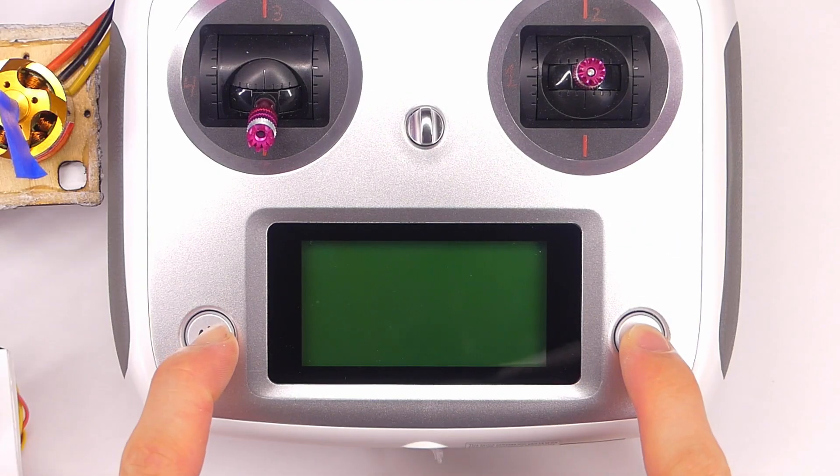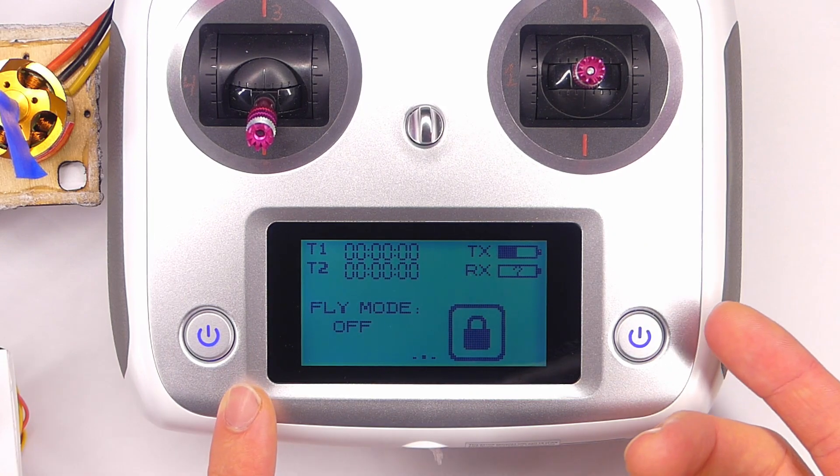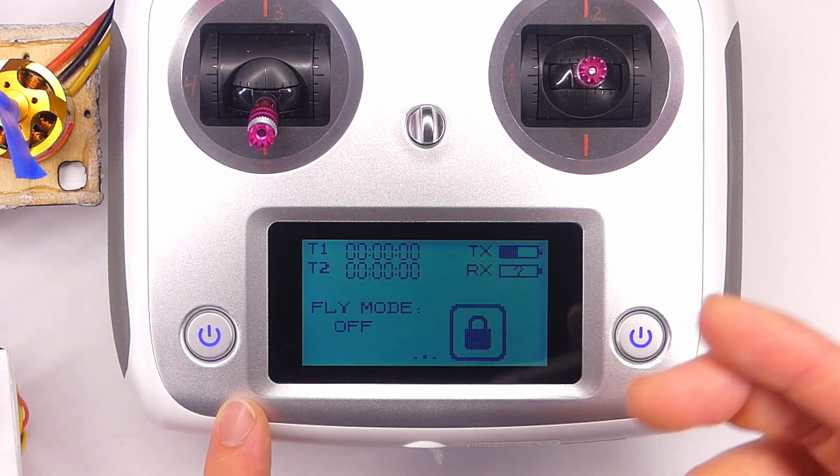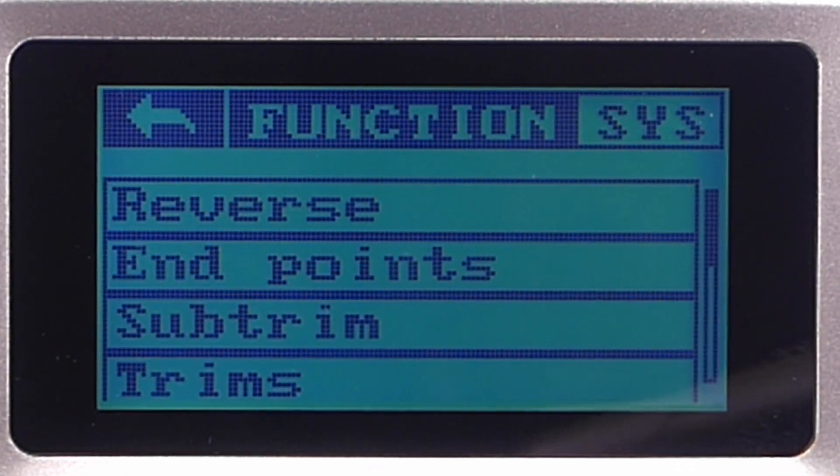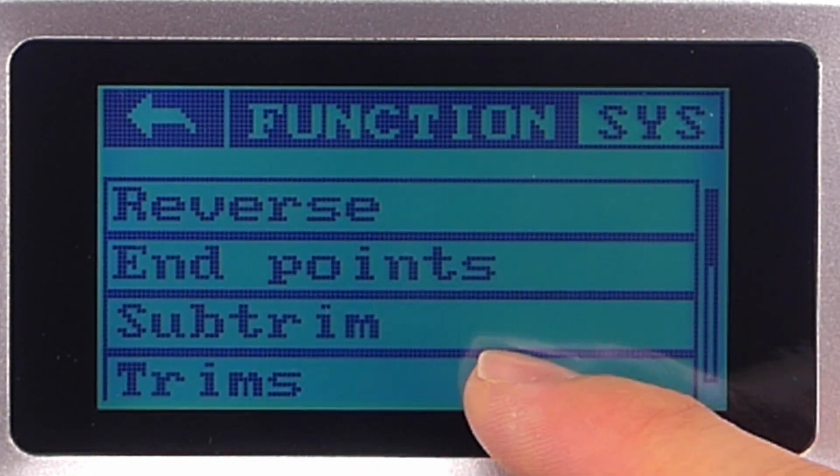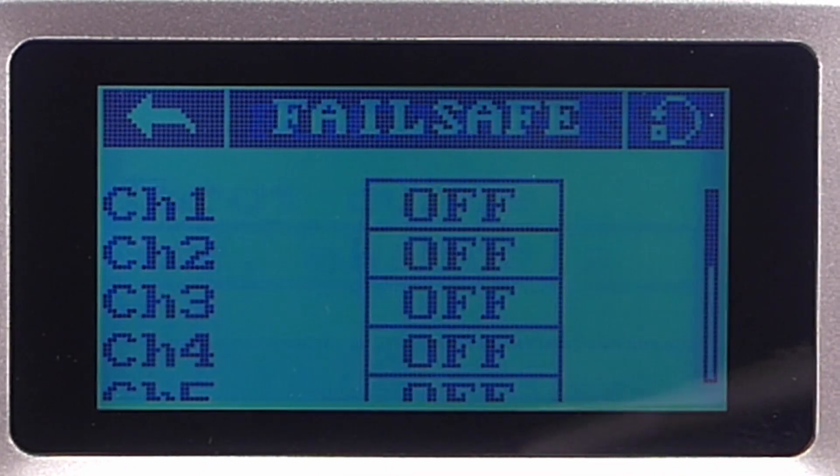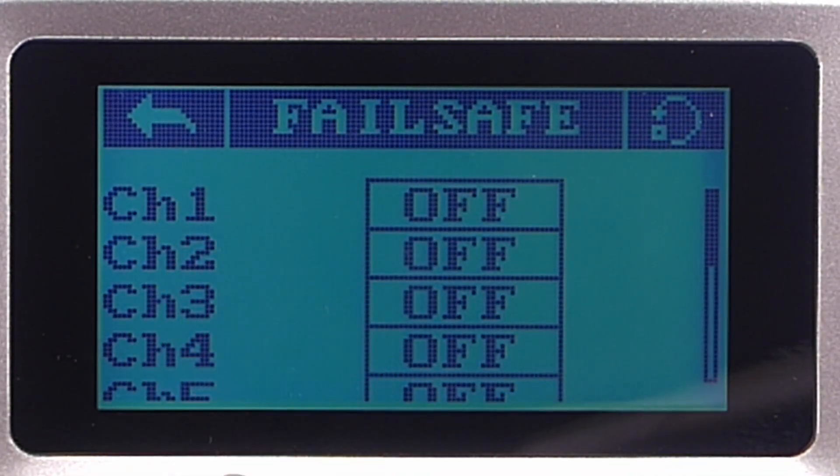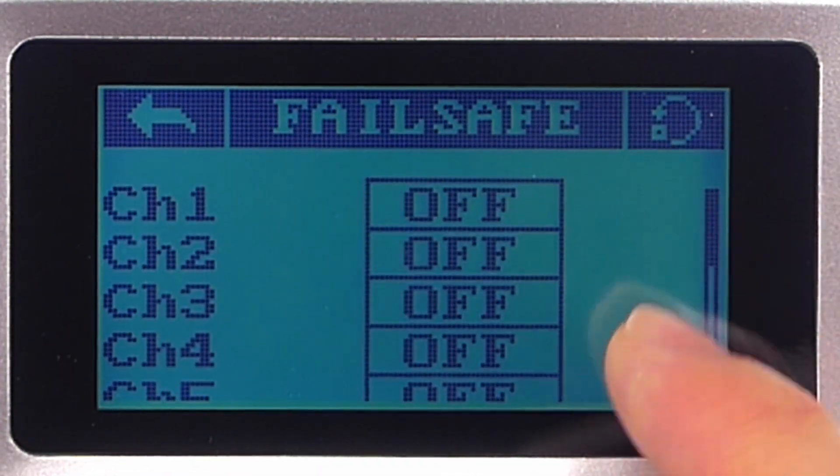First thing we're going to do is turn on our transmitter. And by the way I'm using the most recent firmware, the April 4th 2020 update. Tap our lock to unlock it. We'll go into the menu, the function menu here. And then we'll scroll down all the way to the bottom to where it says failsafe. Now you see we have all of our different channels and those correspond to the sticks and the switches if we have them set up.